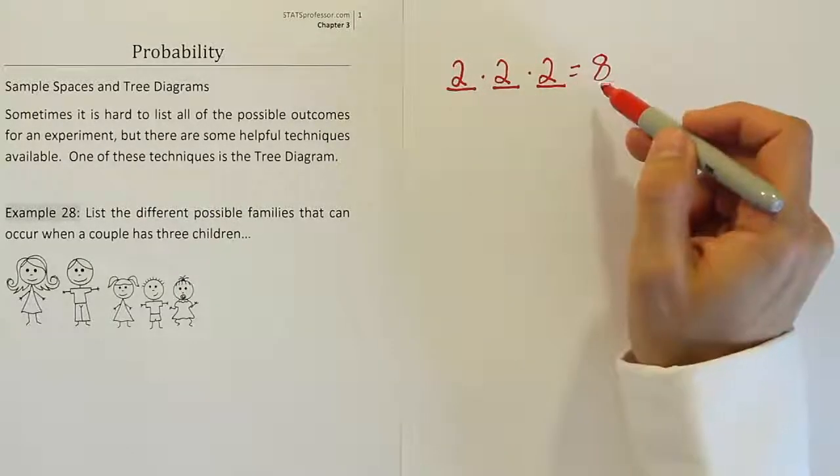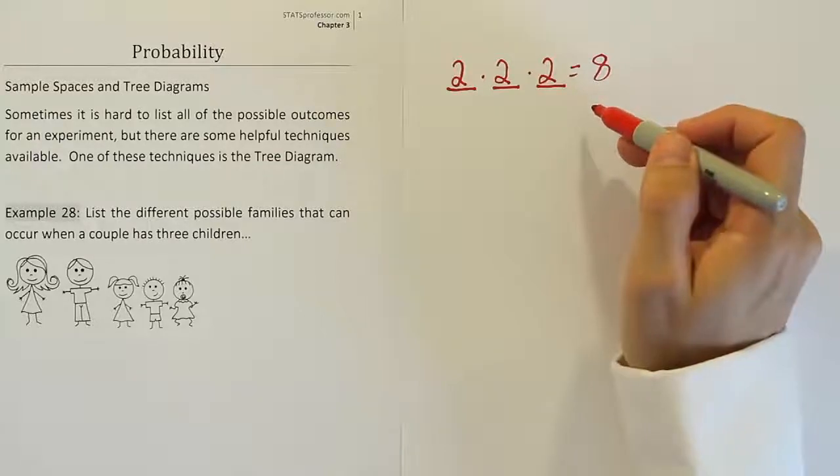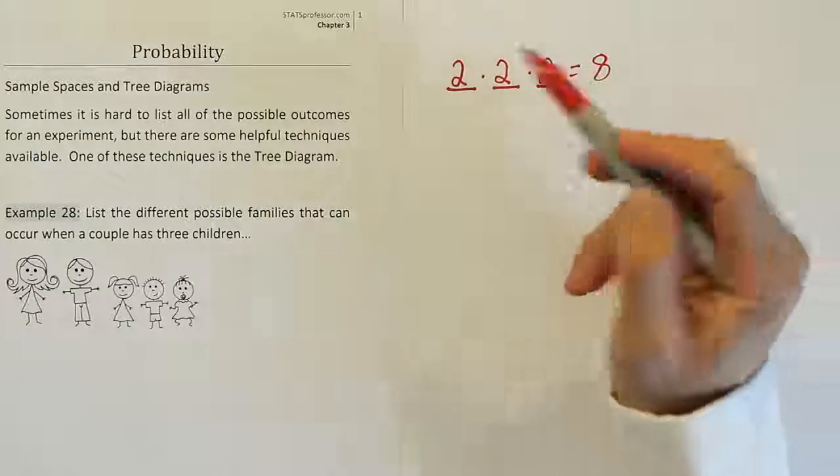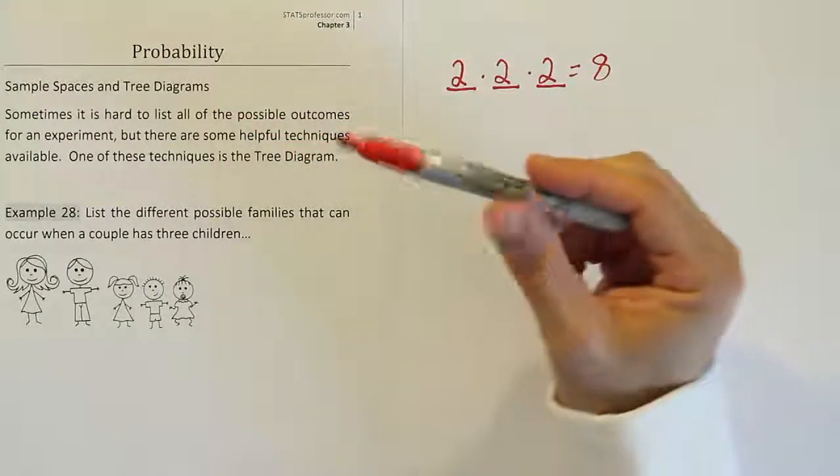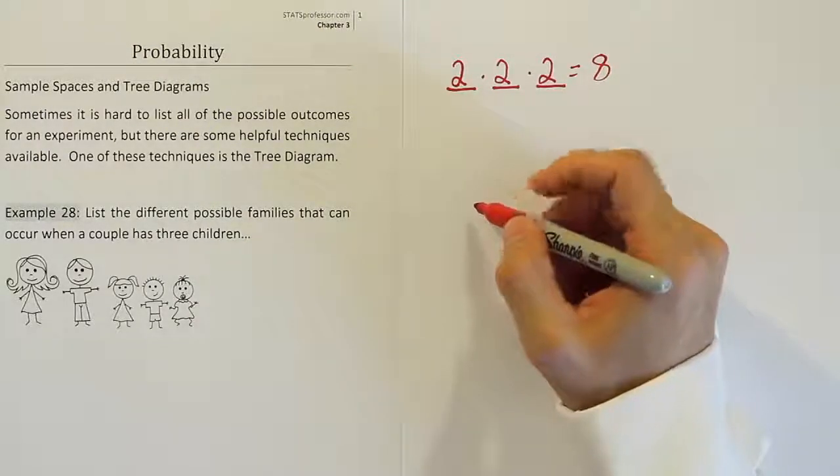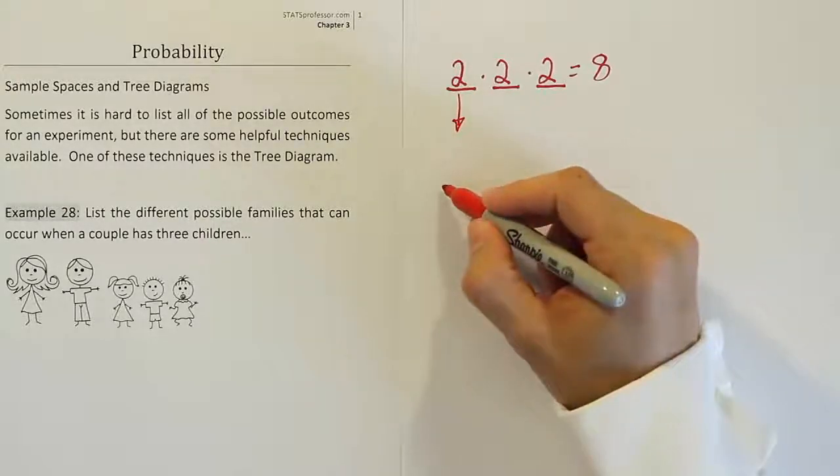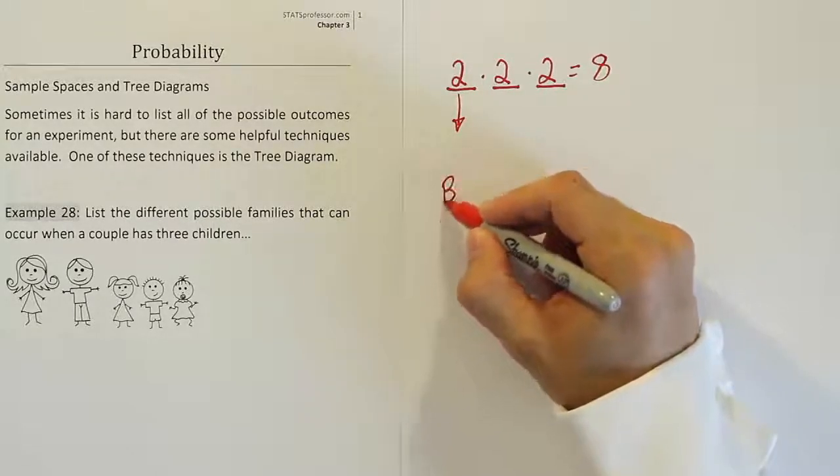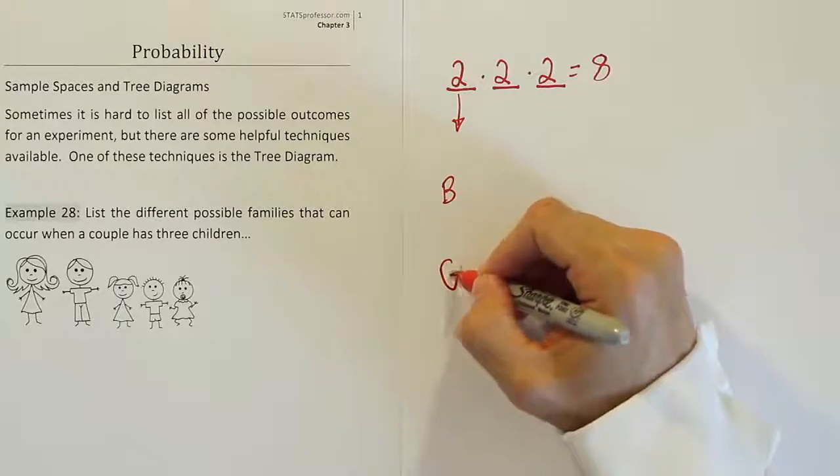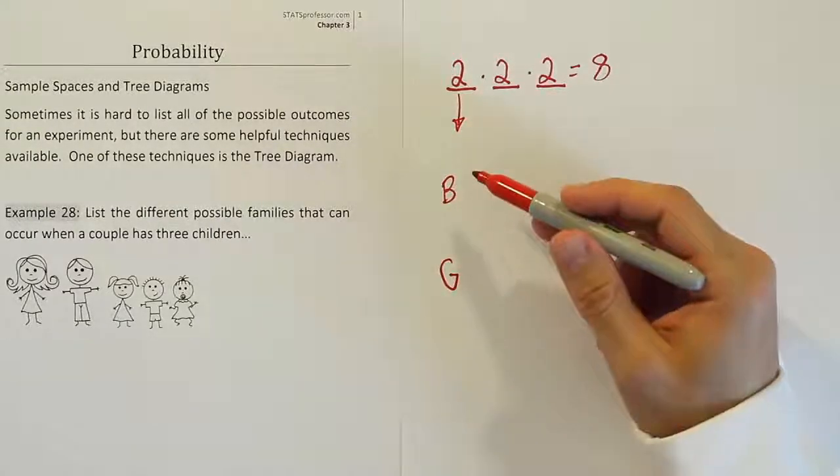Alright, so once we know that there are eight possible outcomes, there are at least two major approaches to produce that list of outcomes. I'm going to teach us the most simple one, which is called a tree diagram. A tree diagram basically works like this. You'll take the first birth, and you'll say, how can the first birth occur? Well, it could occur as either boy or girl. Those are the only outcomes if we assume just boy or girls are possible.